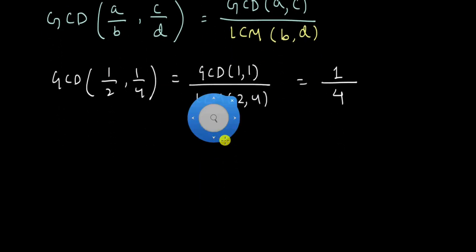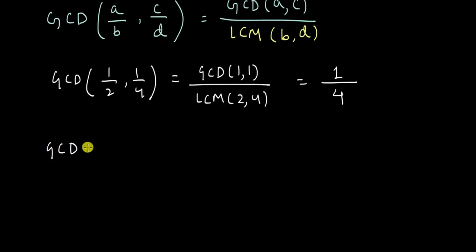Now let's try it for a different set of numbers. Let's try and find the GCD of 15 by 4 and 9 by 14. This seems fairly tedious to do without this trick. So why don't you give it a shot first, use this trick and try to find the answer and then we'll do it together.